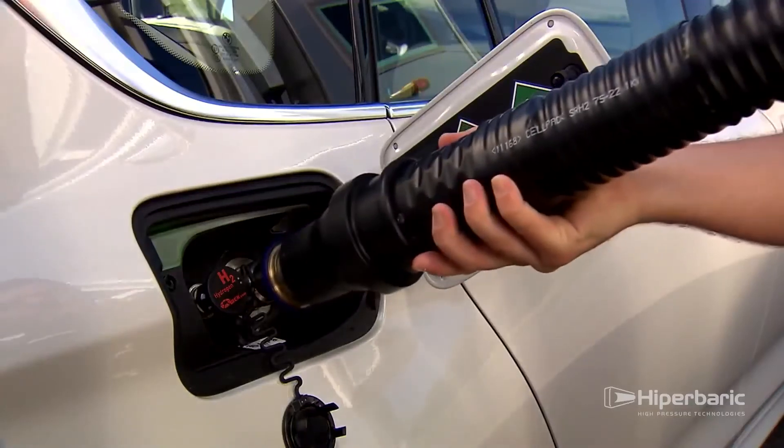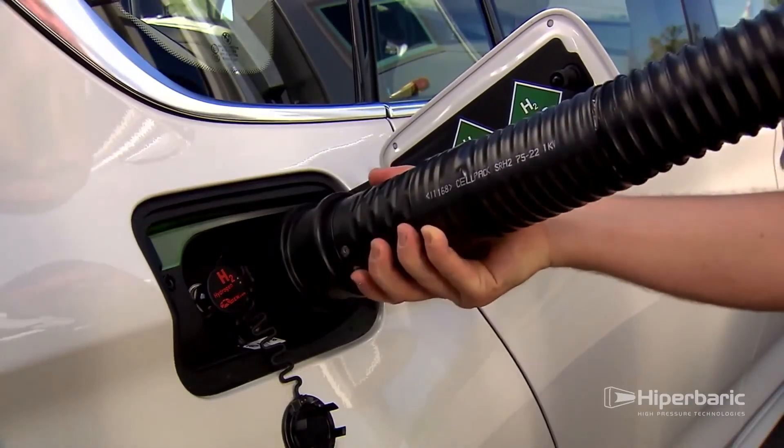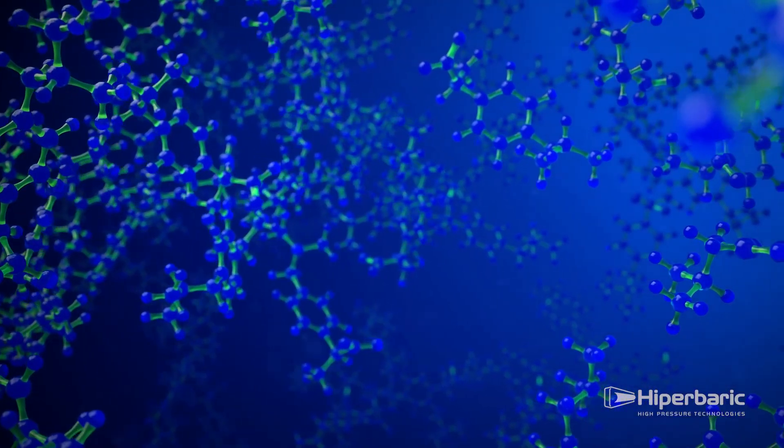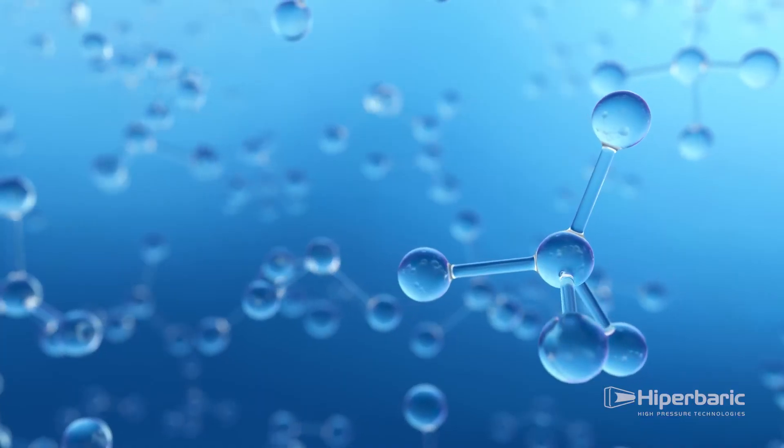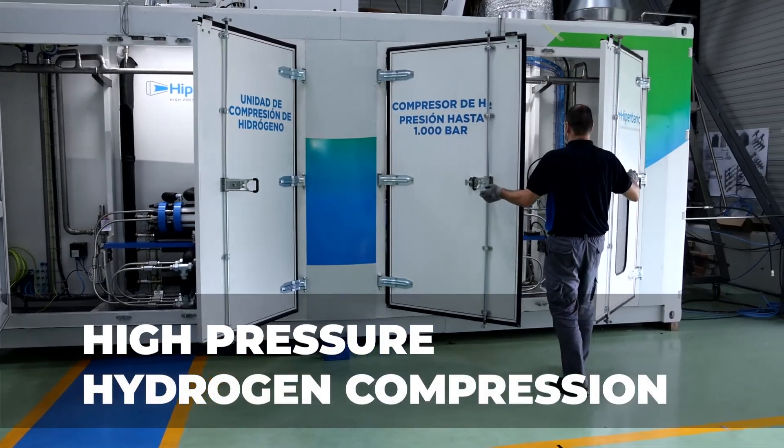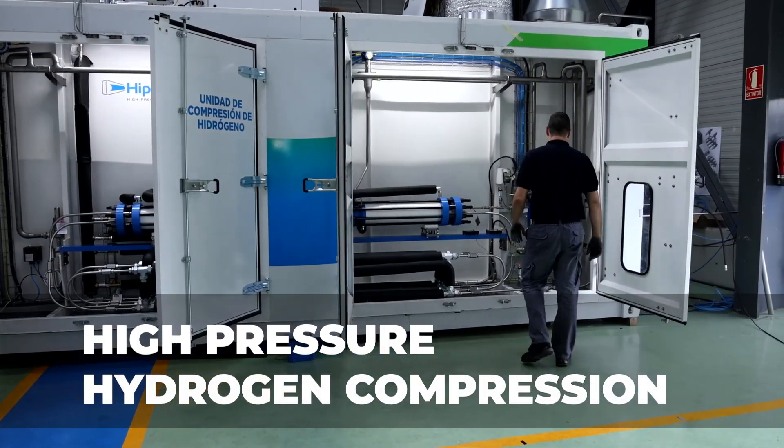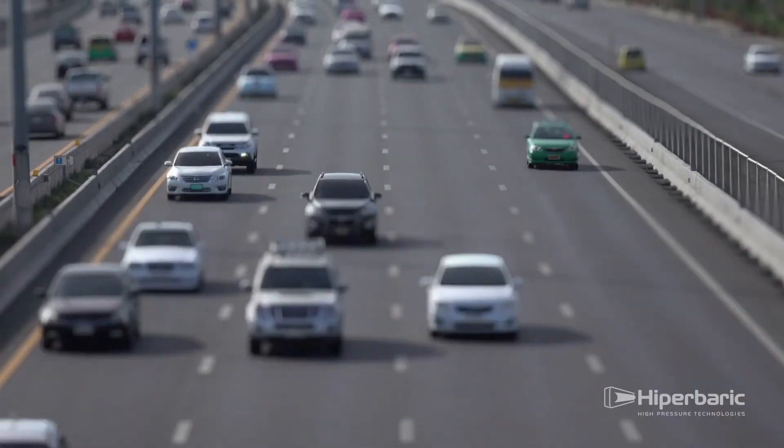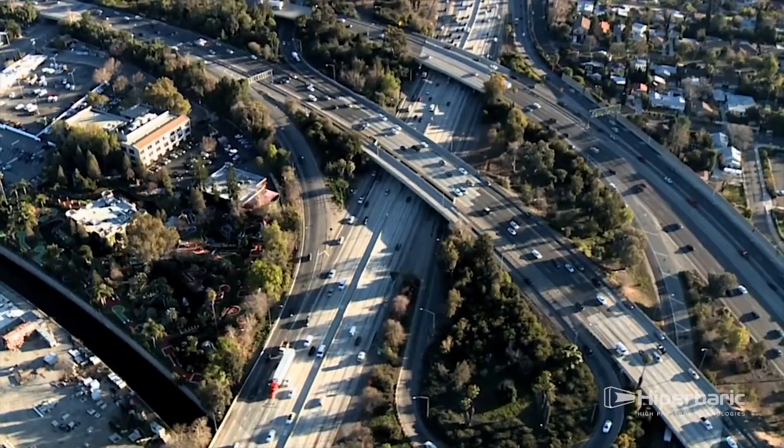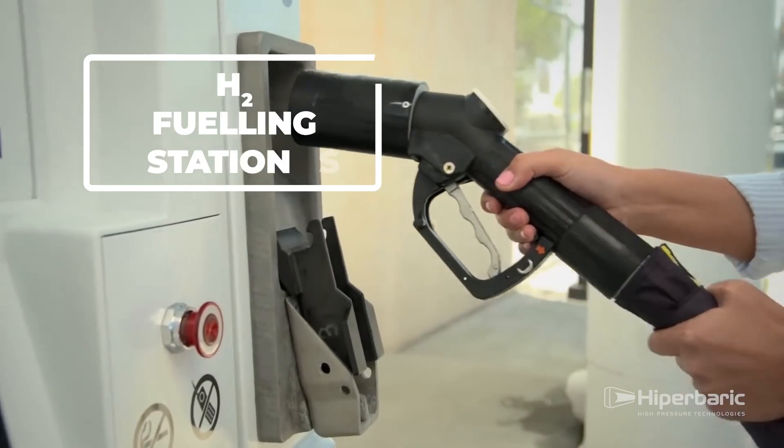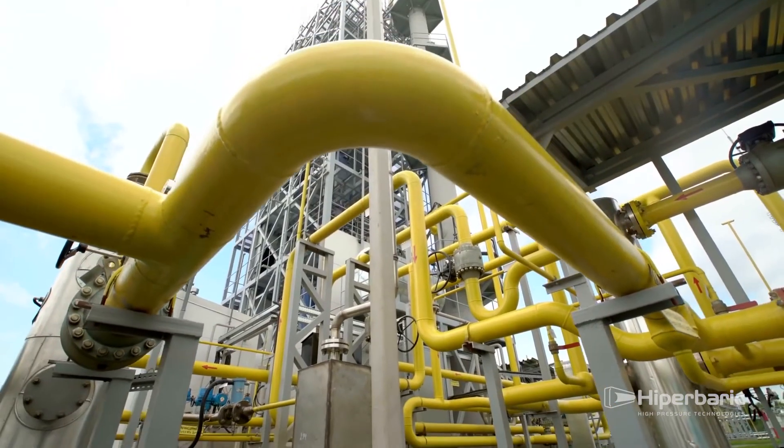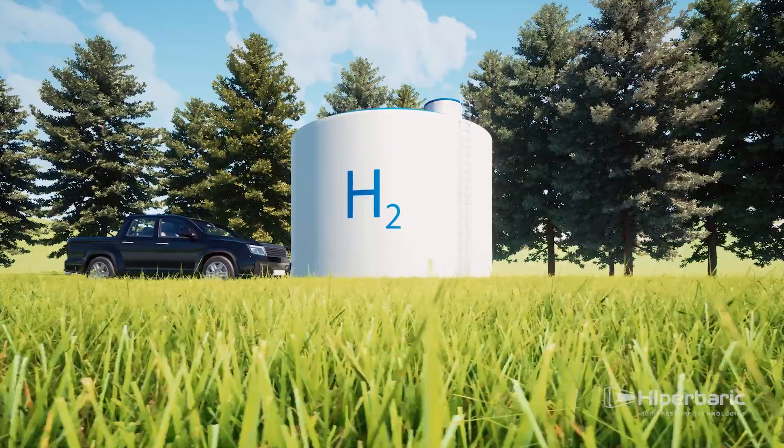To make its use extensible to various fields and applications, hydrogen presents some storage challenges due to its low density at ambient temperature and pressure. One solution to densify hydrogen, and the most economical, is to compress it to very high pressures. High-pressure hydrogen can be applied in different areas, especially for fuel cell vehicle refueling at hydrogen refueling stations. It can also be used for industrial or energy storage applications.